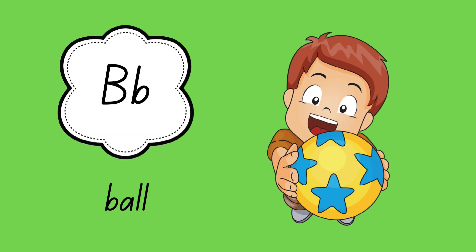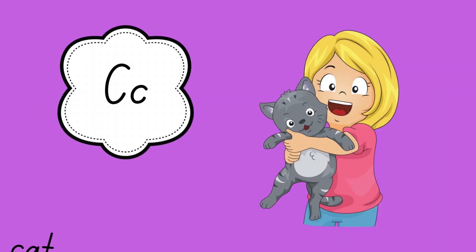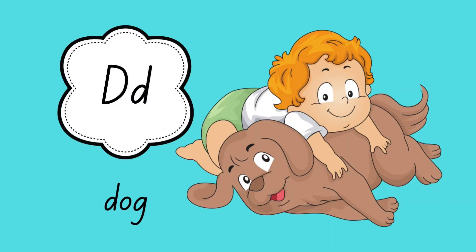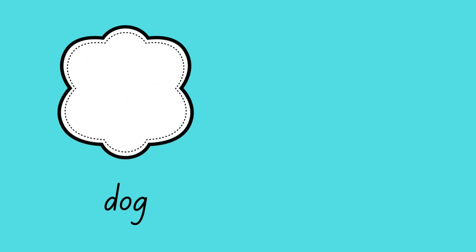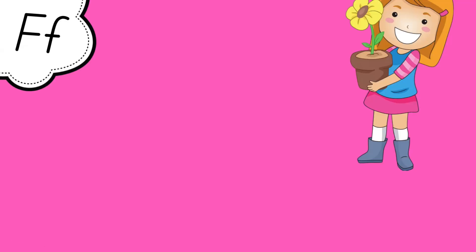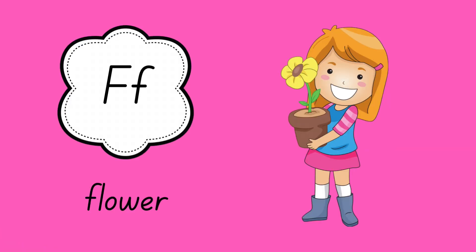B is for ball. C is for cat. D is for dog. E is for egg. F is for flower.